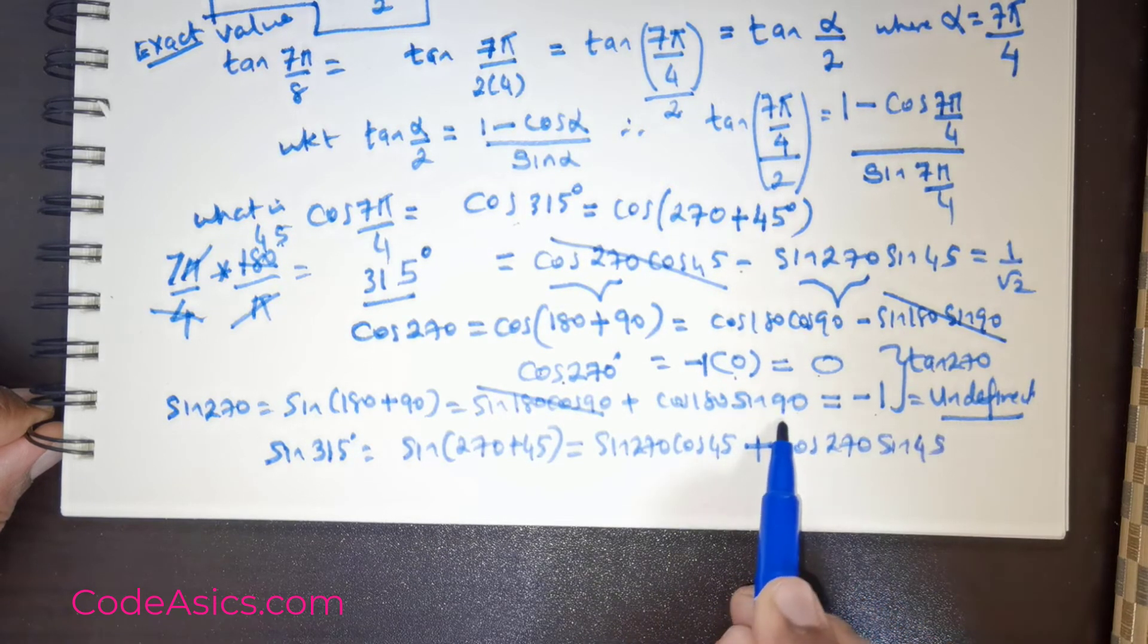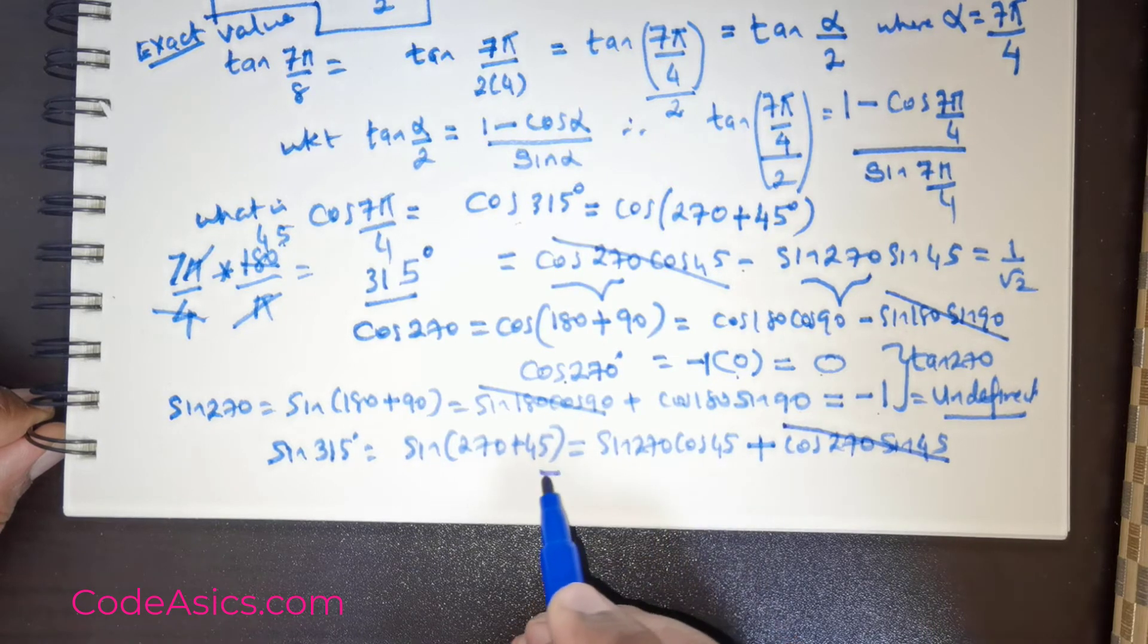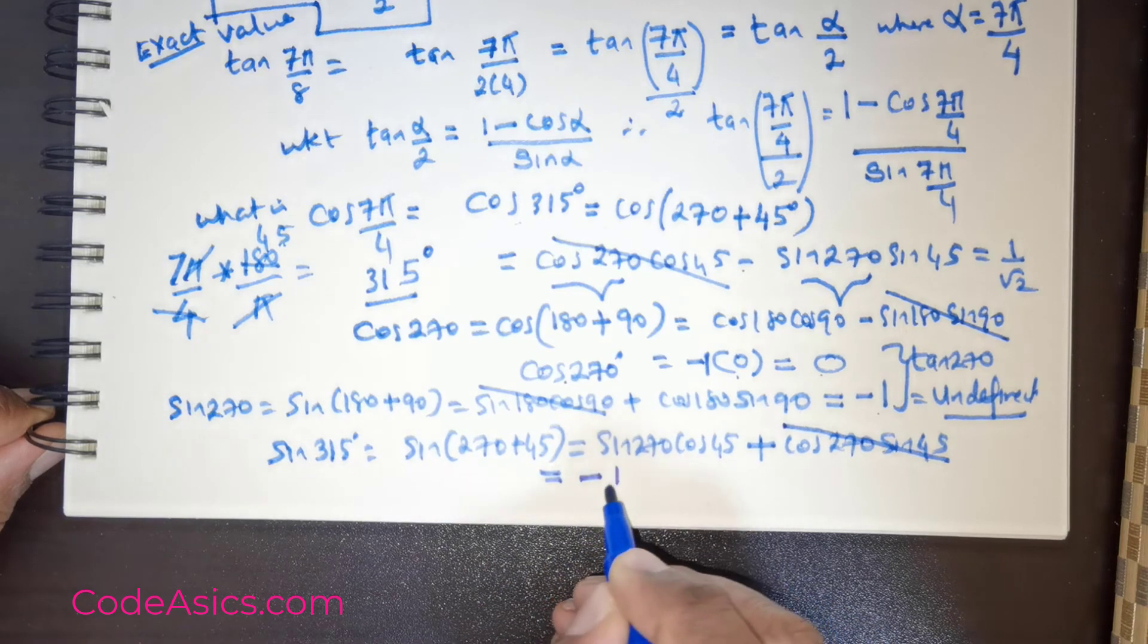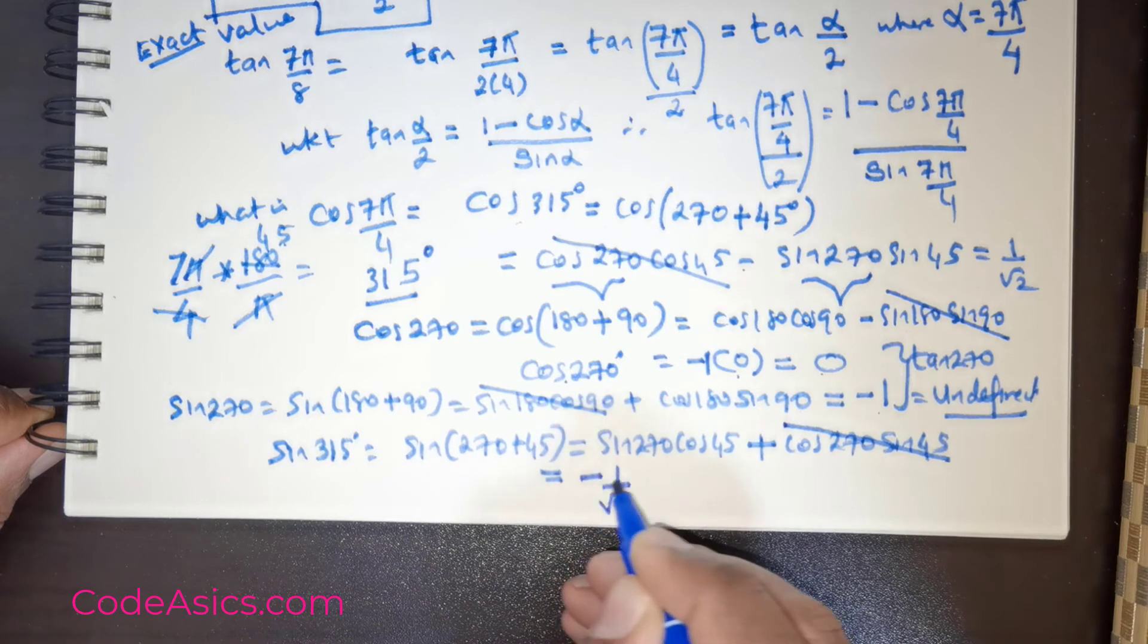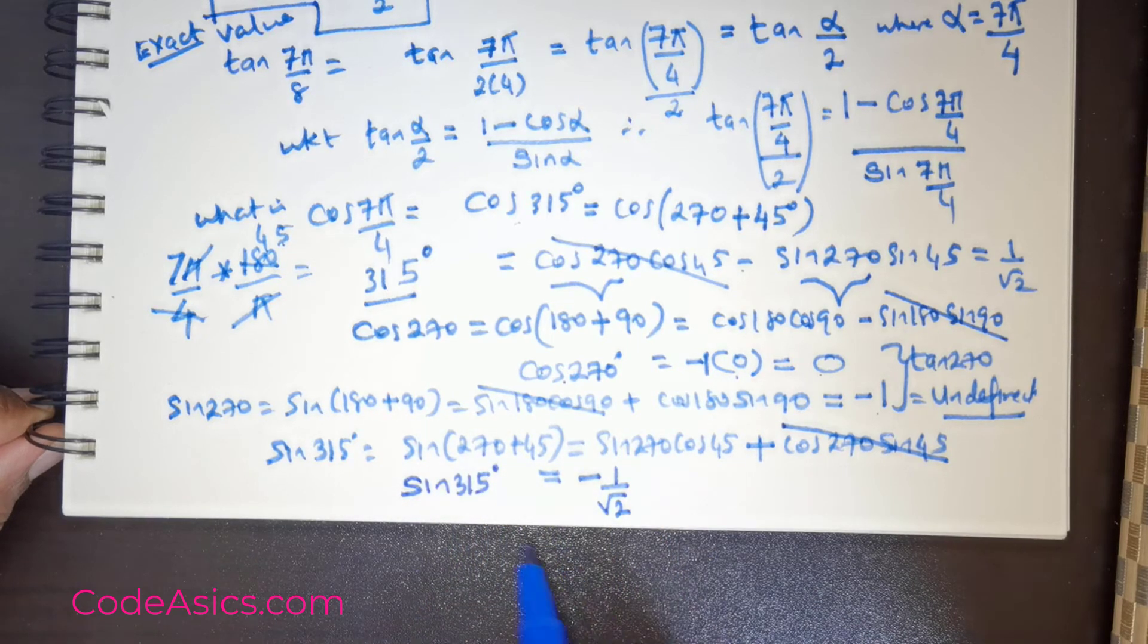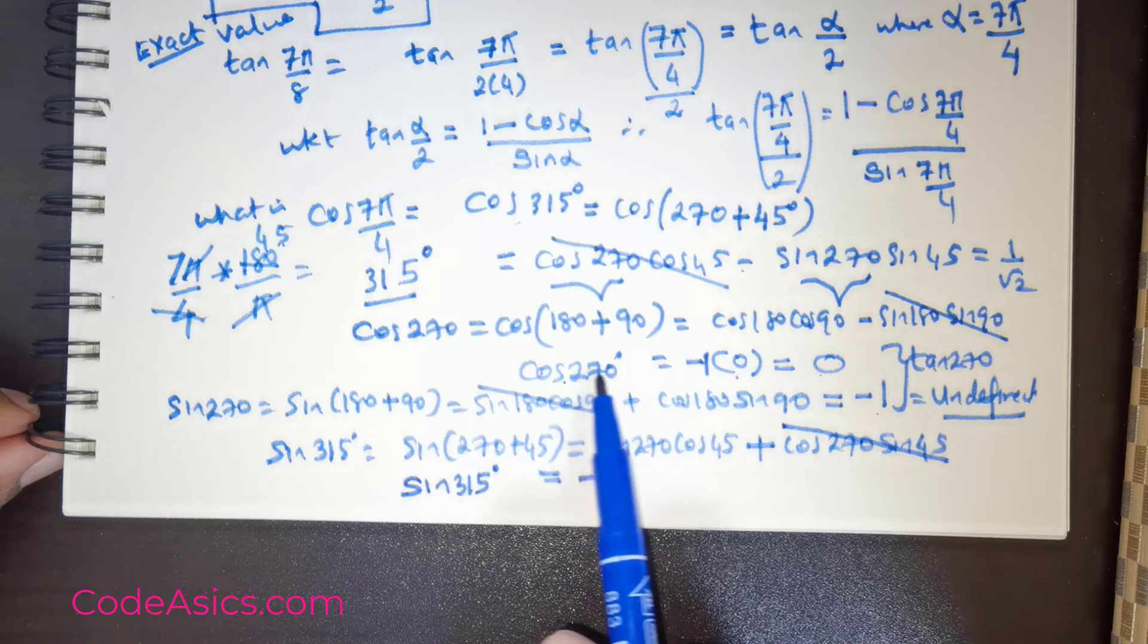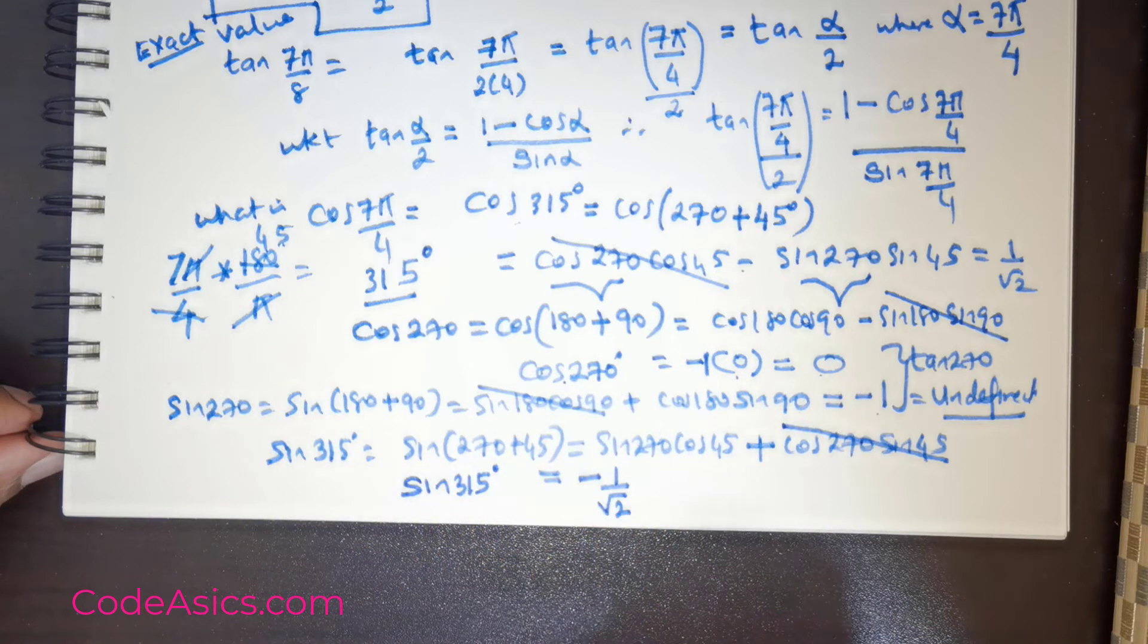Now clearly we know cos 270 is 0, so that goes off. Sin 270 is negative 1. So you get negative 1 over, cos 45 is 1 over root 2. So it's negative 1 over root 2. So we got the value for sin 315 degrees. Isn't it amazing? Just with one important information, we were able to decipher all other values.